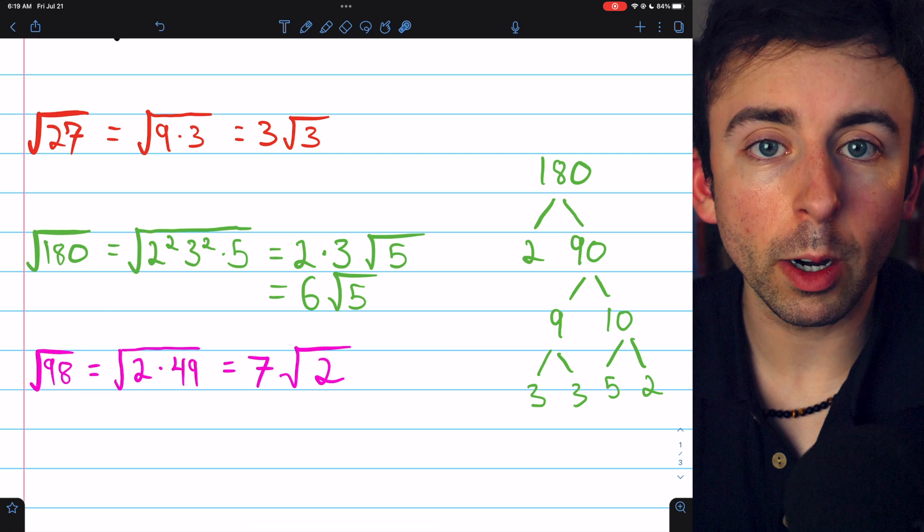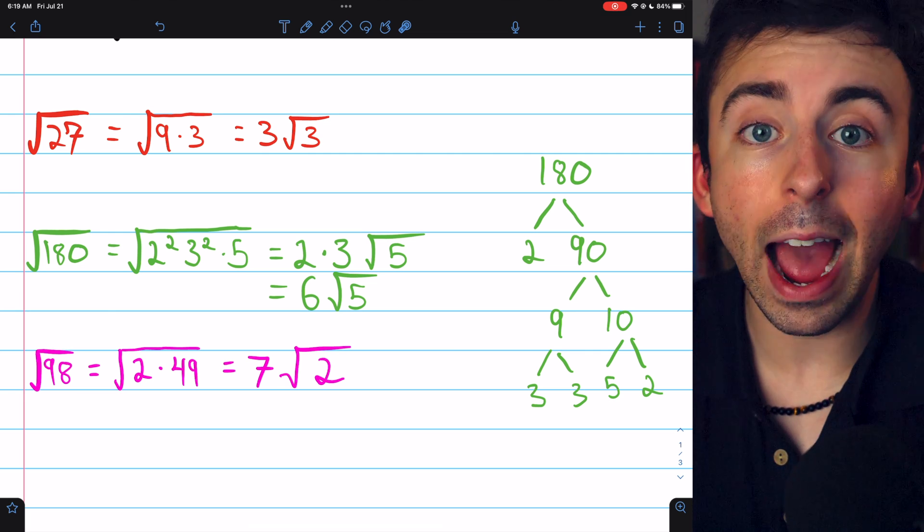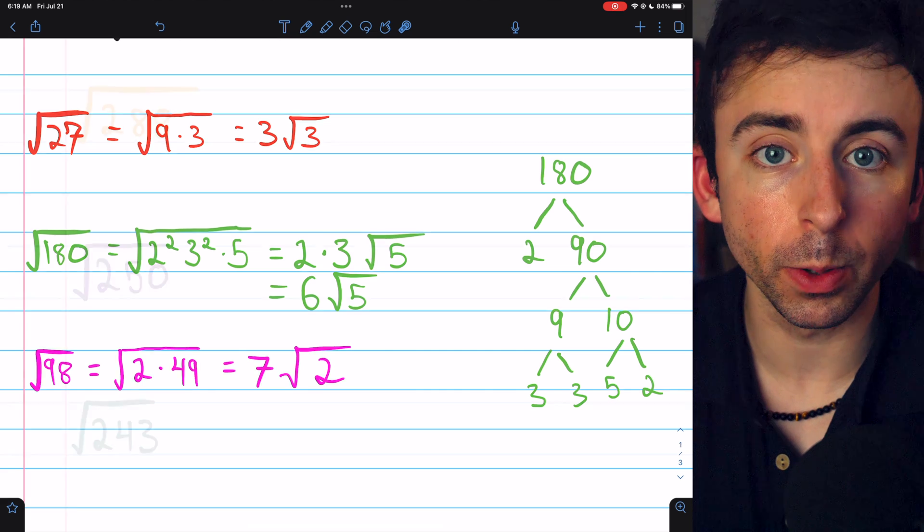That's how to simplify square roots. You just need to take all of the perfect squares you can out from the root by taking their square roots.